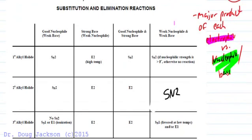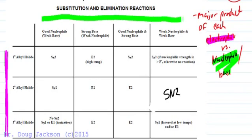Along the left axis we have the identity of the carbon to which the leaving group is attached, whether it's primary, secondary, or tertiary. And along the top axis we have the identity of the nucleophile and base, so descriptors of each.